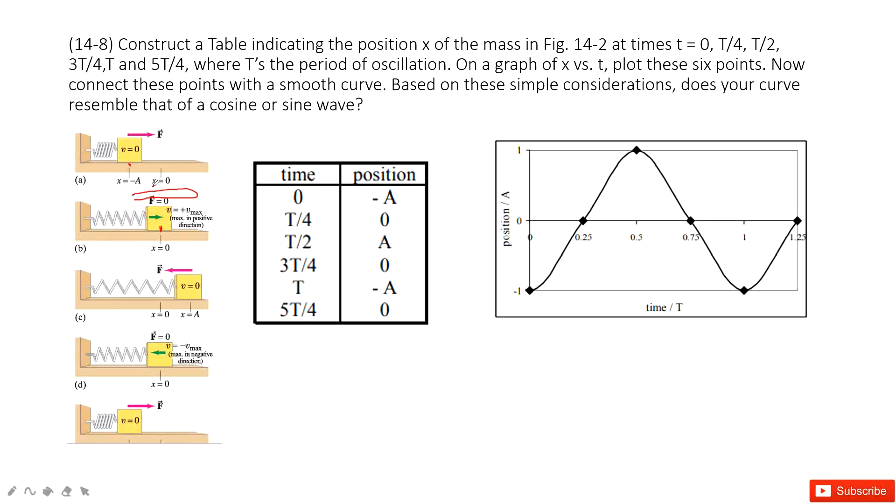From there to x equals 0 is just a quarter of T. The position is 0, and at half of T it arrives at A. Then at three-quarters of T it's 0, and at T it comes back to negative A.